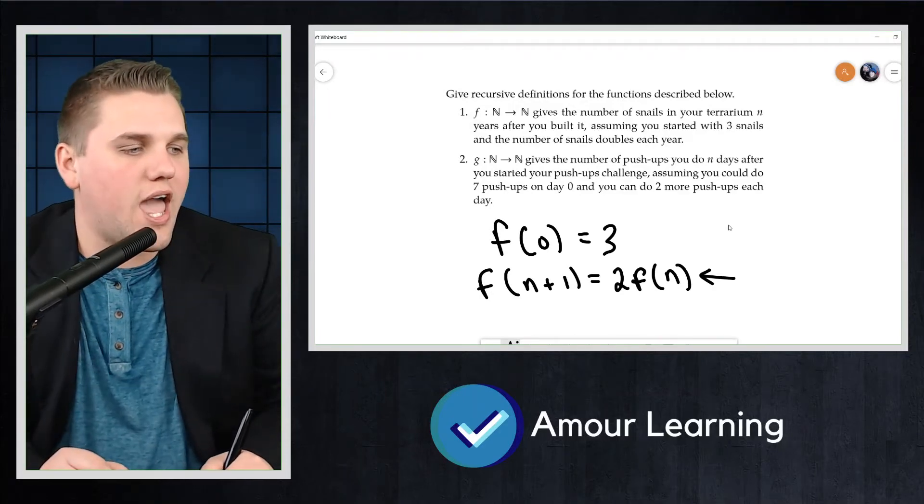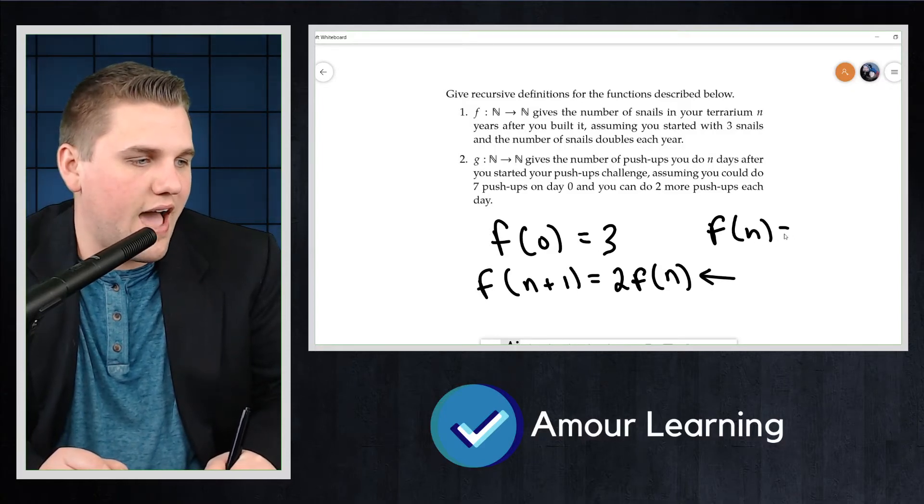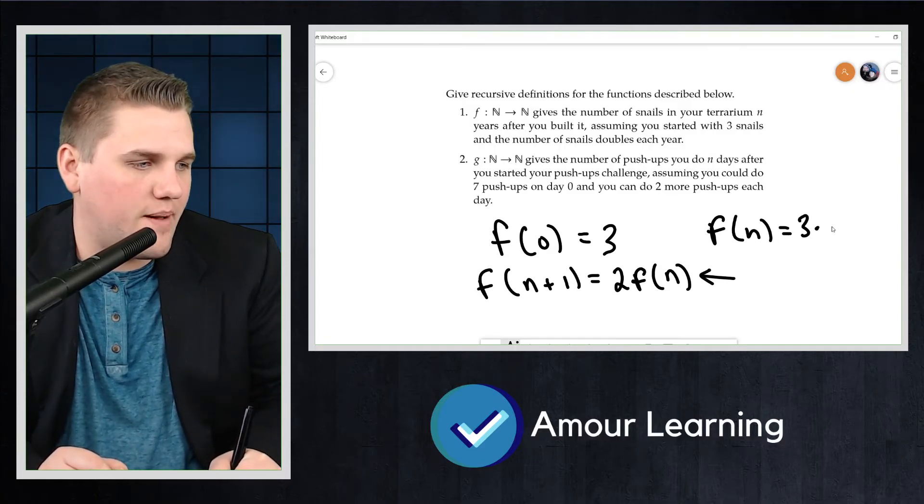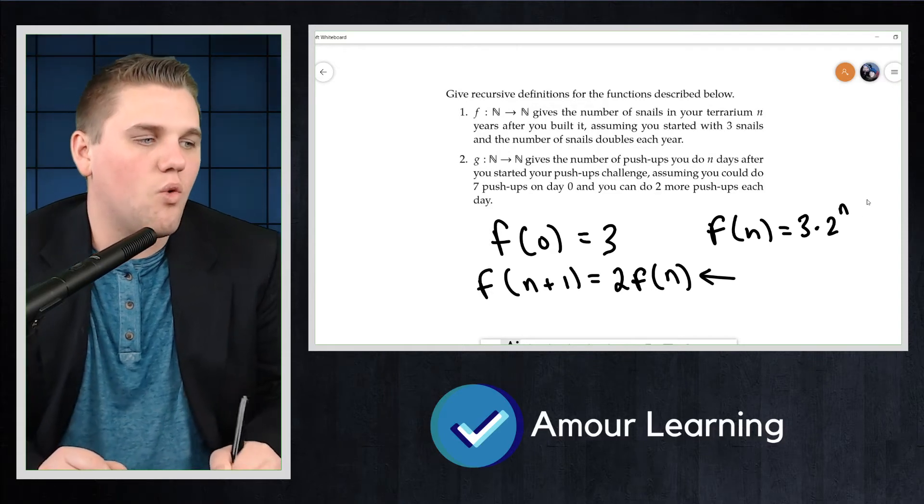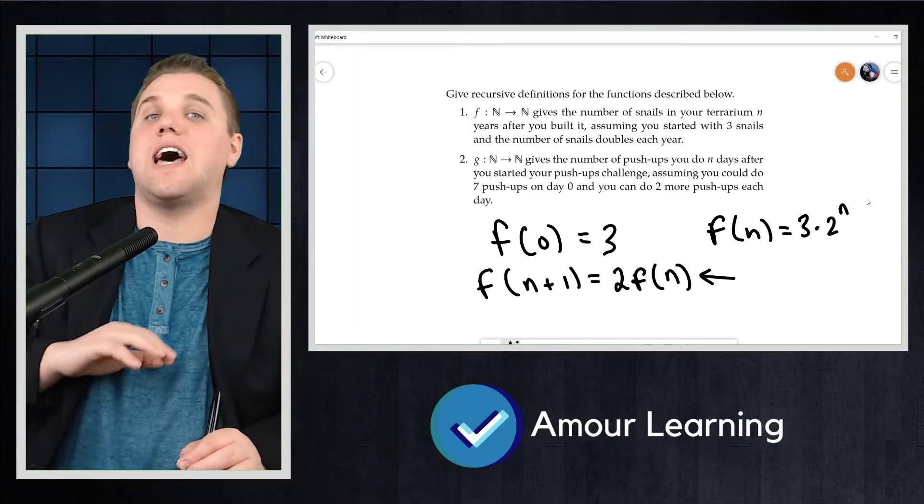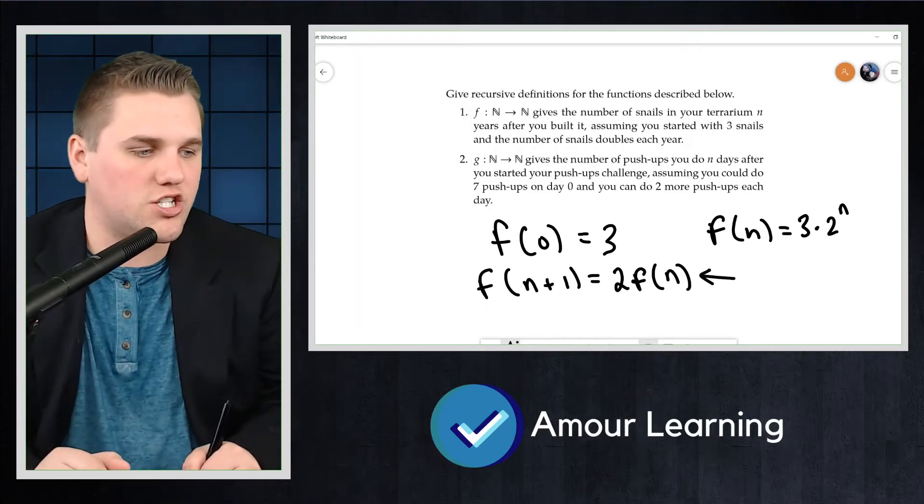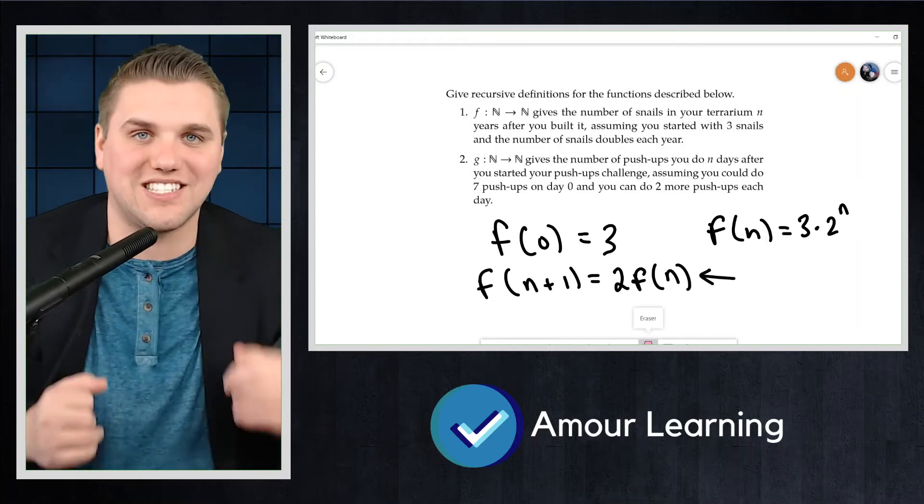Now, technically, you can create a closed form of this, namely that f(n) = 3 × 2^n, where you could just plug in n equals whatever you want and you can immediately find the output. But that is different from a recurrence relation. Recurrence relation just tells you how do you get the next output.